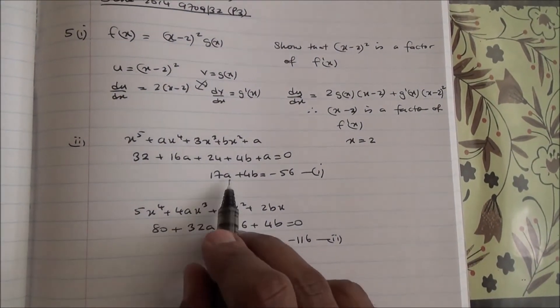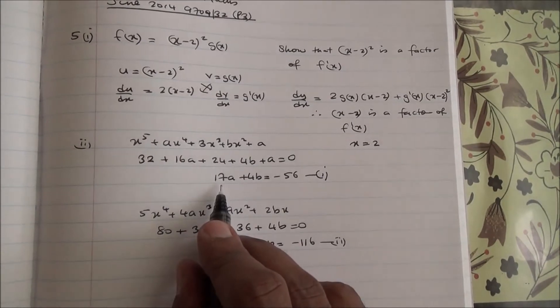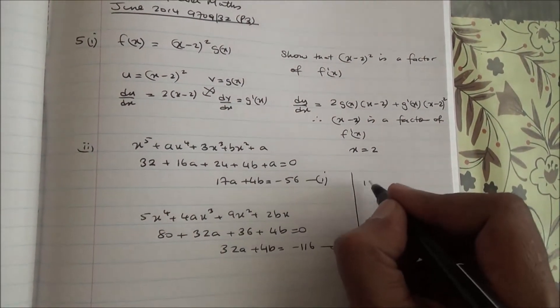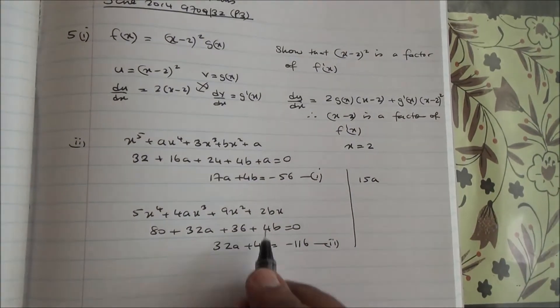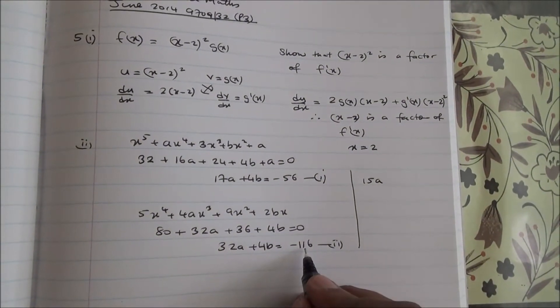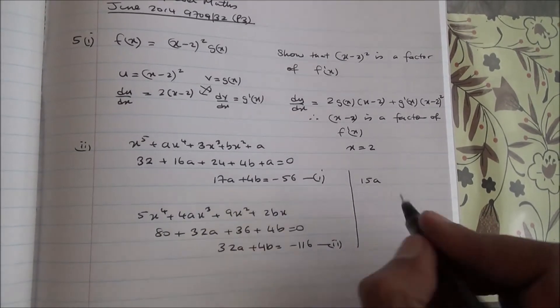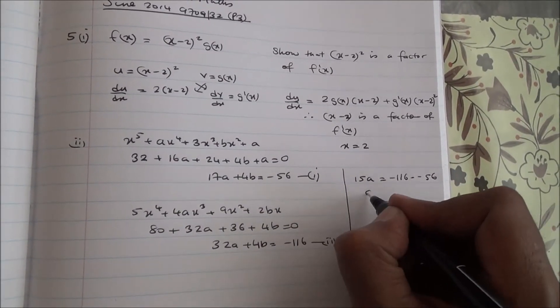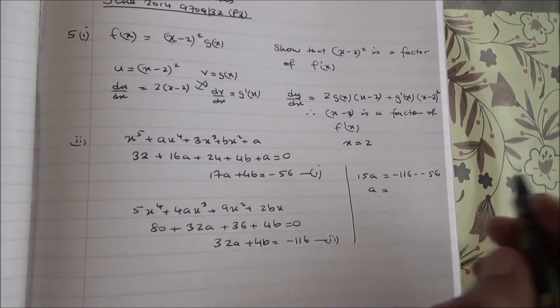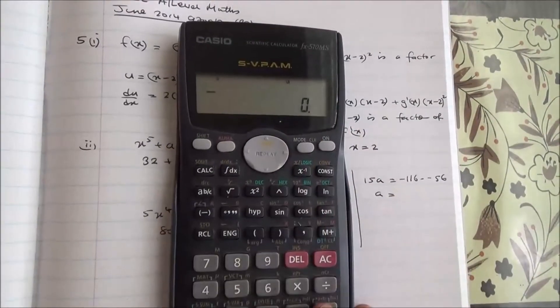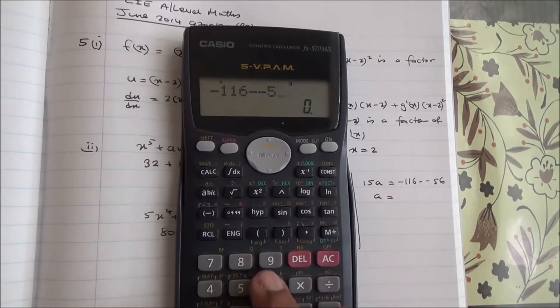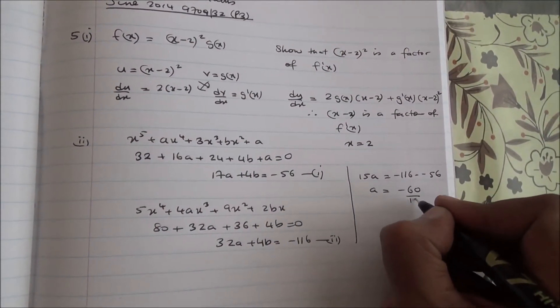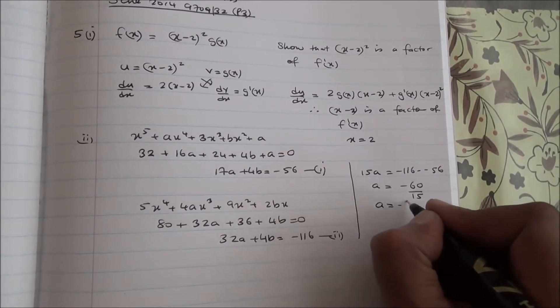So, let's take the second equation minus the first one, 32a - 17a is going to end up with 15a. So, this equation minus 4b, 4b, 4b - 4b cancels out, -116 minus (-56), so that's going to be minus 60, so -60 over 15, meaning that a is going to equal -4.